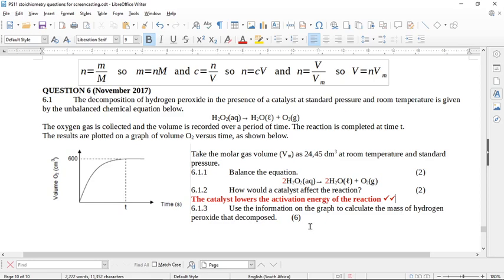Use the information on the graph to calculate the mass of hydrogen peroxide that decomposed. So in order to do this, we actually say to ourselves, what do we actually know? And the only thing that we actually are given here, we have to read off the graph. If you look on this graph, they've given you the volume of oxygen when this experiment runs to completion. So this reaction here produced 600 cubic centimeters of oxygen. So what we are allowed to do is now work out what is the moles of oxygen produced. So we're going to use this one, n equals V over V_m. But because this occurred at room temperature, we have to use this V_m.